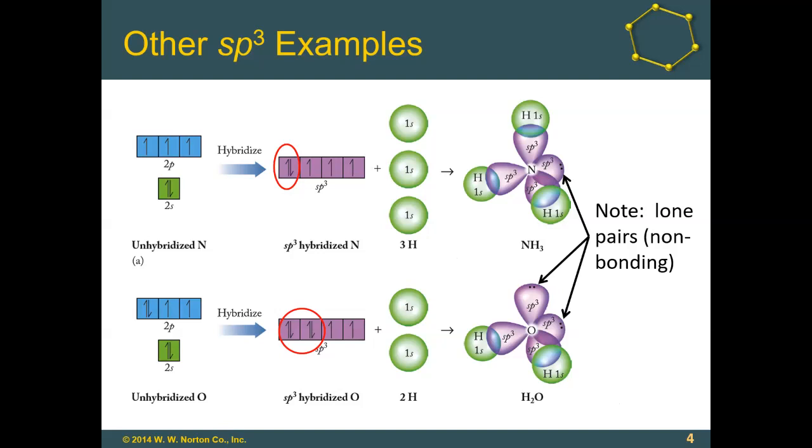Lone pairs of electrons are at the same energy as sigma bonds. Anything with tetrahedral electron geometry, including ammonia and water, has sp3 hybridization. Nitrogen's sp3 orbitals have three unpaired electrons, forming three sigma bonds. Oxygen's sp3 orbitals have two unpaired electrons, forming two sigma bonds in water.